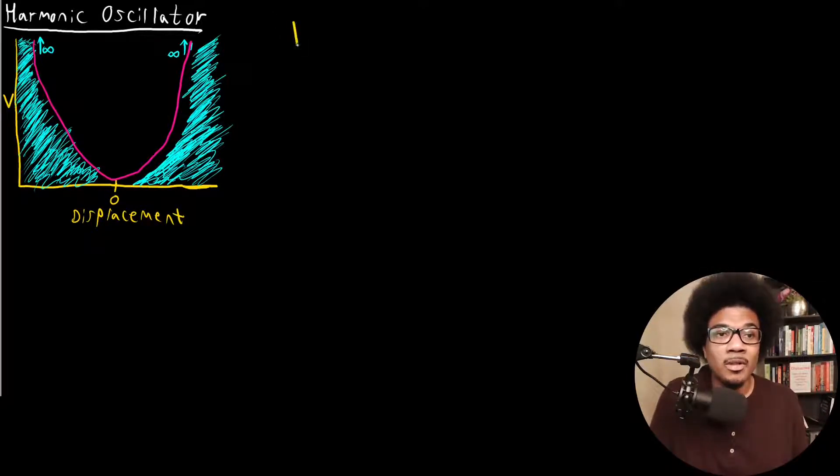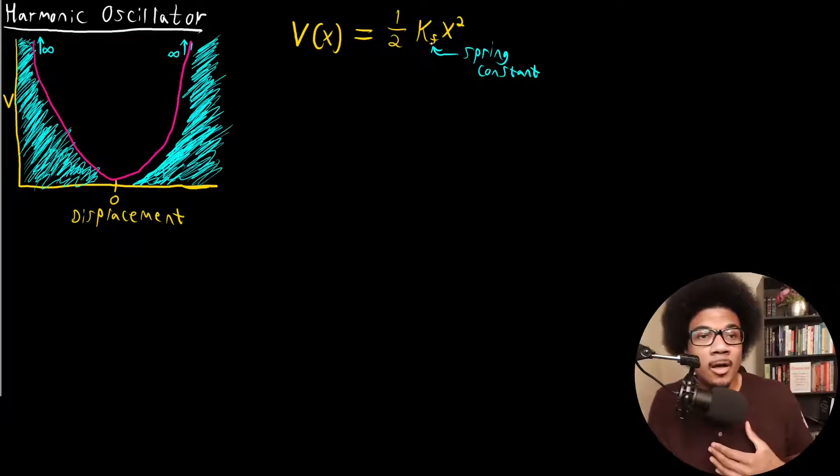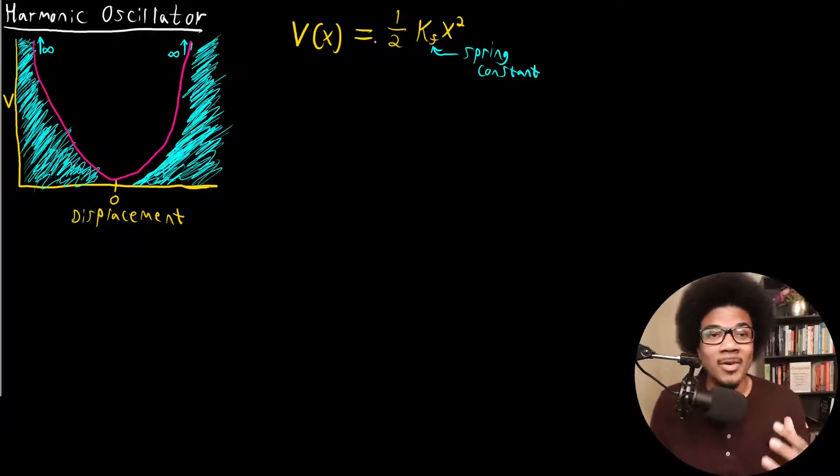Specifically, it's going to be defined by the following potential energy. You'll have some potential energy function where you'll have 1/2 K_f x², where that K_f is your spring constant. This defines your restorative spring potential, the restorative force for your potential.